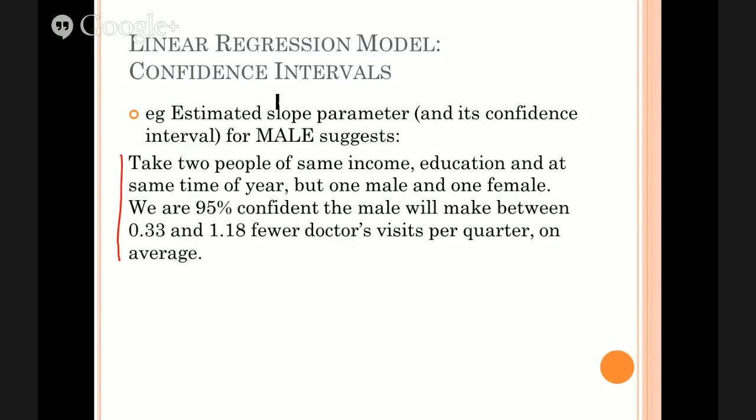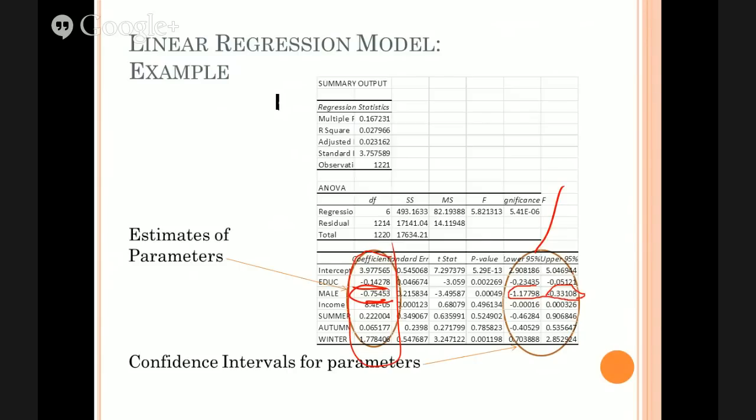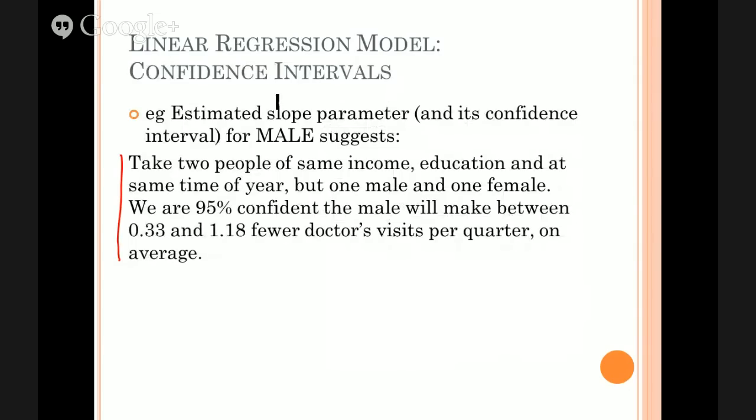It's virtually identical to the interpretation of the coefficient itself. It's just that instead of saying two people with the same income, education, the same time of year, one male and one female, the male will visit the doctor on average 0.75 times less, we say we estimate that the male will visit the doctor somewhere between 0.33 and 1.18 times less.